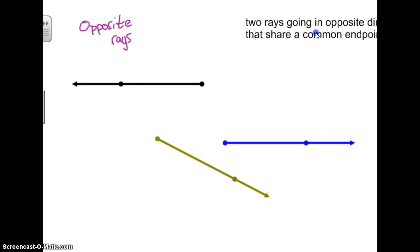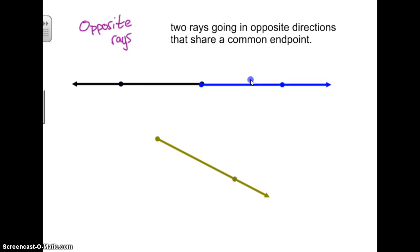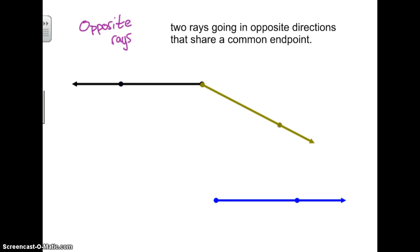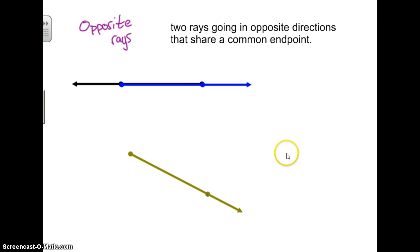Opposite rays are two rays that are going in opposite directions that share a common endpoint. They're going to look something like this. Now, two rays could share a common endpoint, but they wouldn't be opposite rays because they're not going in opposite directions. Two rays could also be going in opposite directions, like in this figure above, but since they don't have a common endpoint, they wouldn't be opposite rays.